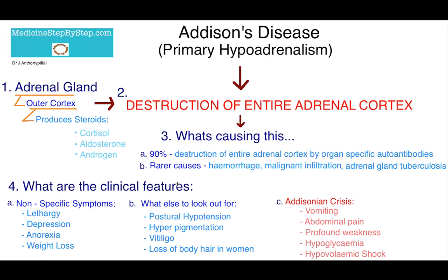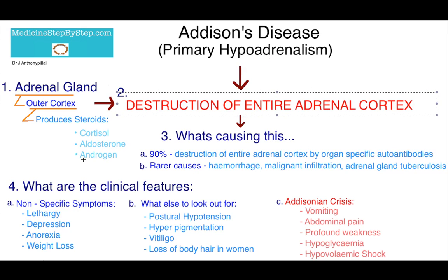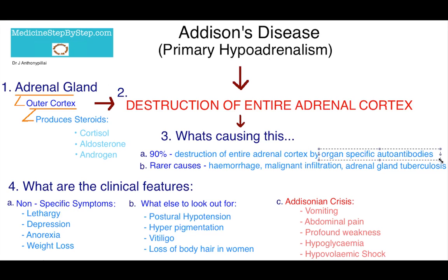To summarise: in Addison's disease, there is destruction of the entire adrenal cortex, which normally produces cortisol, aldosterone, and androgen. The main cause is organ-specific autoantibodies, but there are other rarer causes. Clinical features can be very vague — lethargy, depression, anorexia, and weight loss. Key things to look out for include postural hypotension, hyperpigmentation, vitiligo, and loss of body hair in women. Very importantly, be aware of the Addisonian crisis.